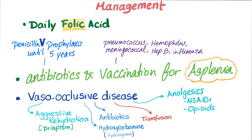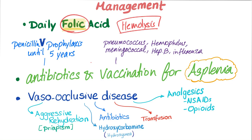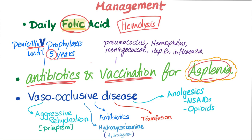Now let's talk management. There is no cure for sickle cell disease except bone marrow transplant. How to manage it: give daily folic acid, because in this disease — as in any hemolysis — there is rapid turnover of cells, so folate is consumed rapidly. For the asplenia, give antibiotics and vaccinate. The antibiotic is penicillin V, given until the child reaches 5 years of age. Vaccinations: there are 5 — pneumococcus, meningococcus, Haemophilus influenzae, influenza virus, and hepatitis B.